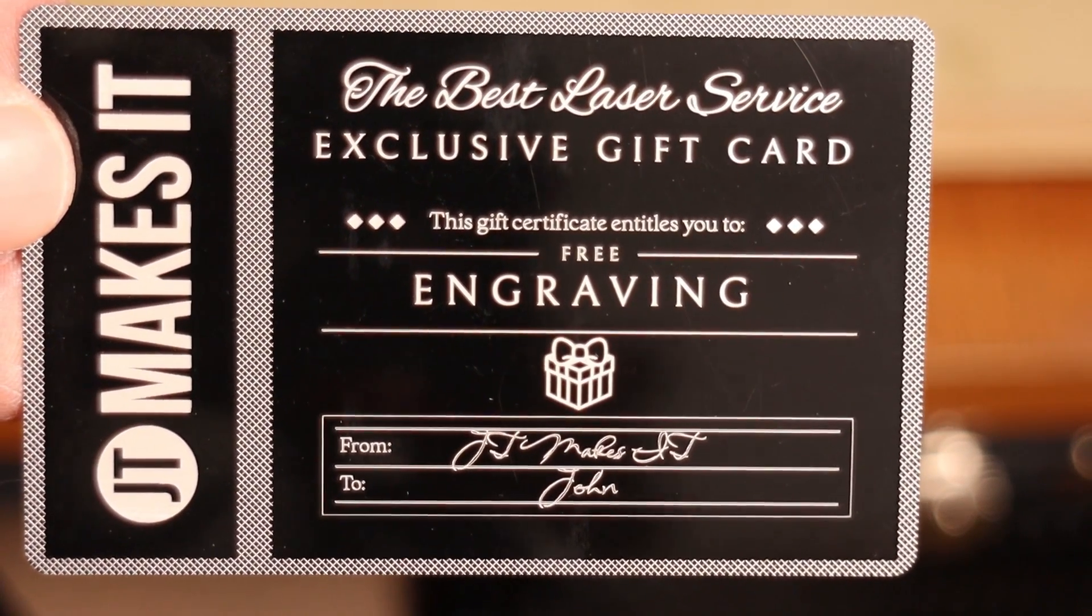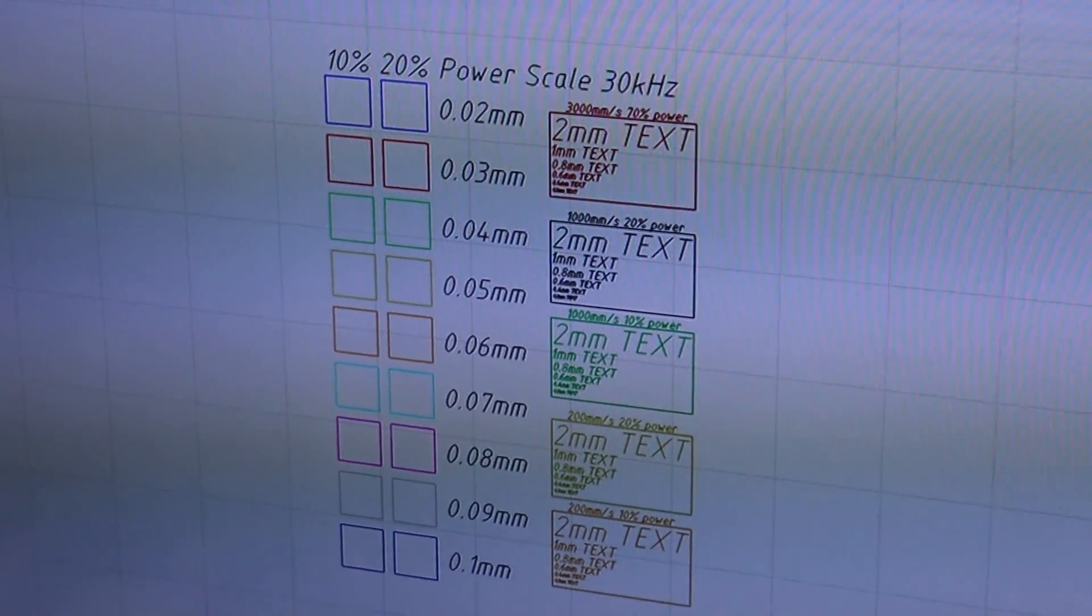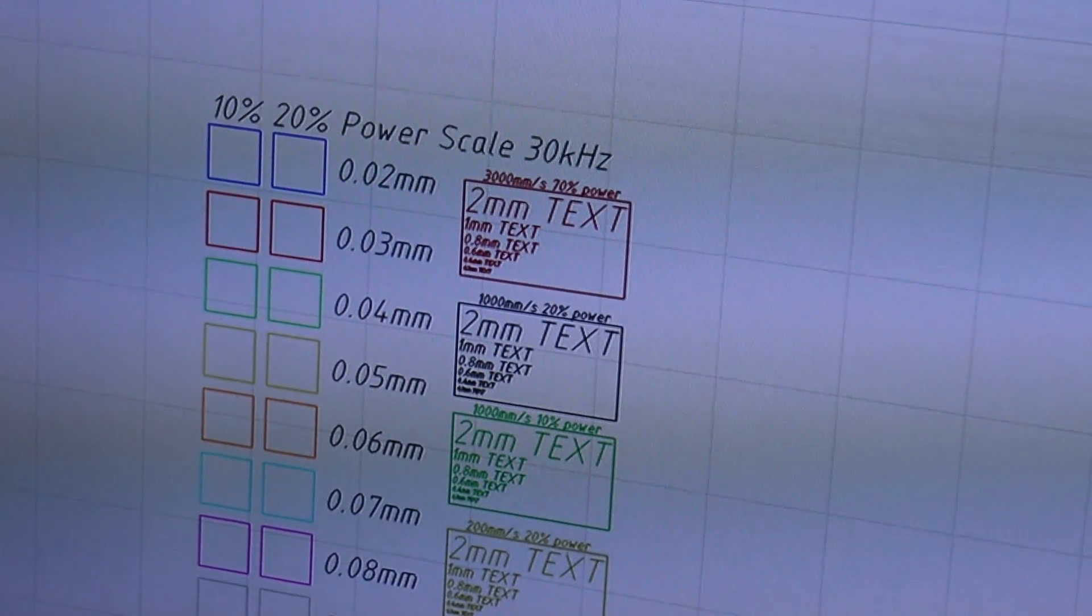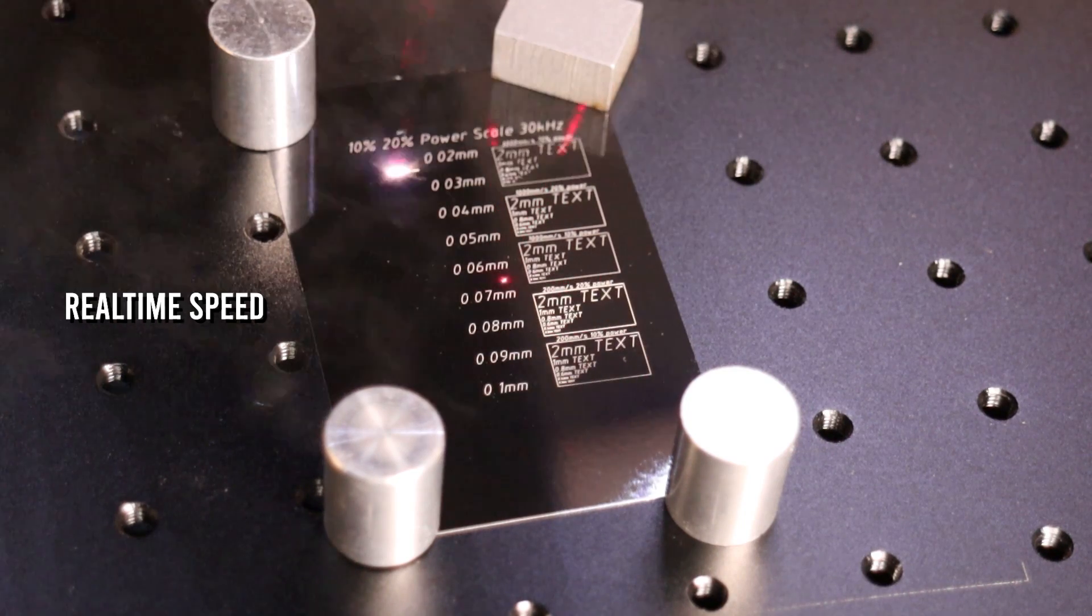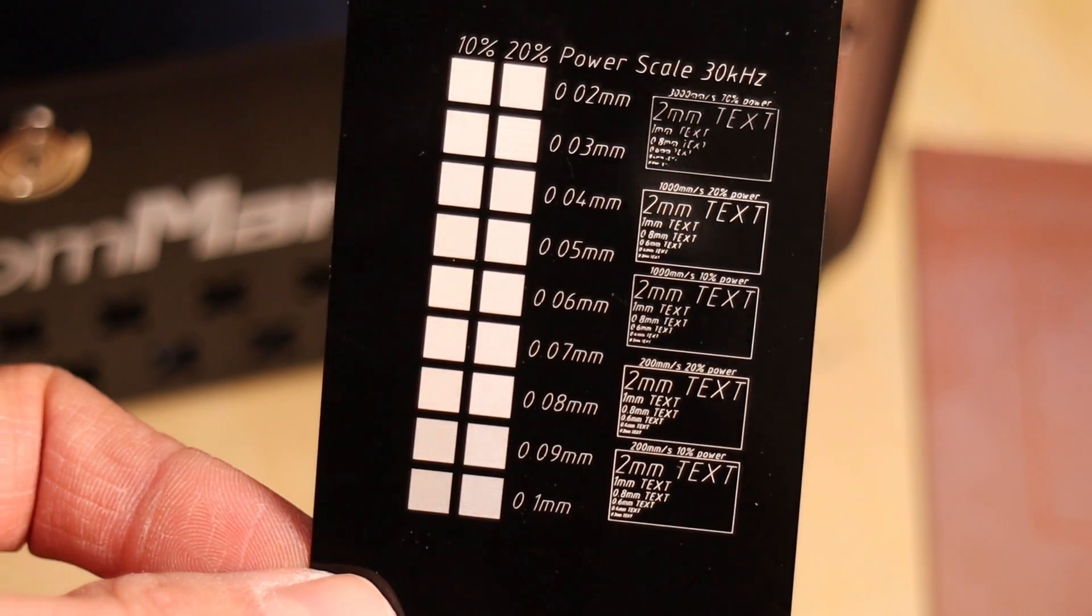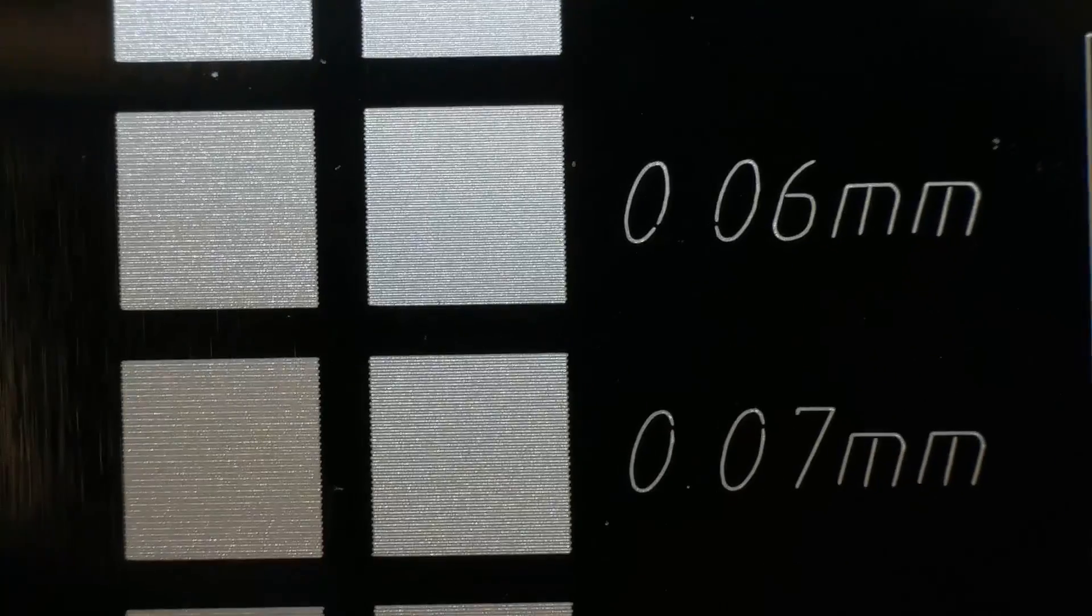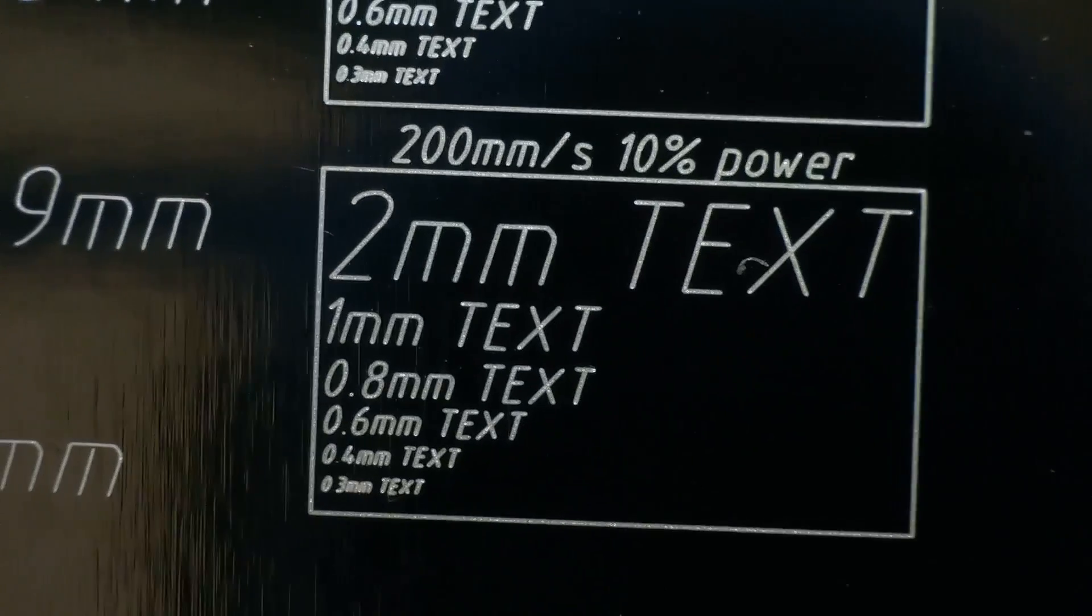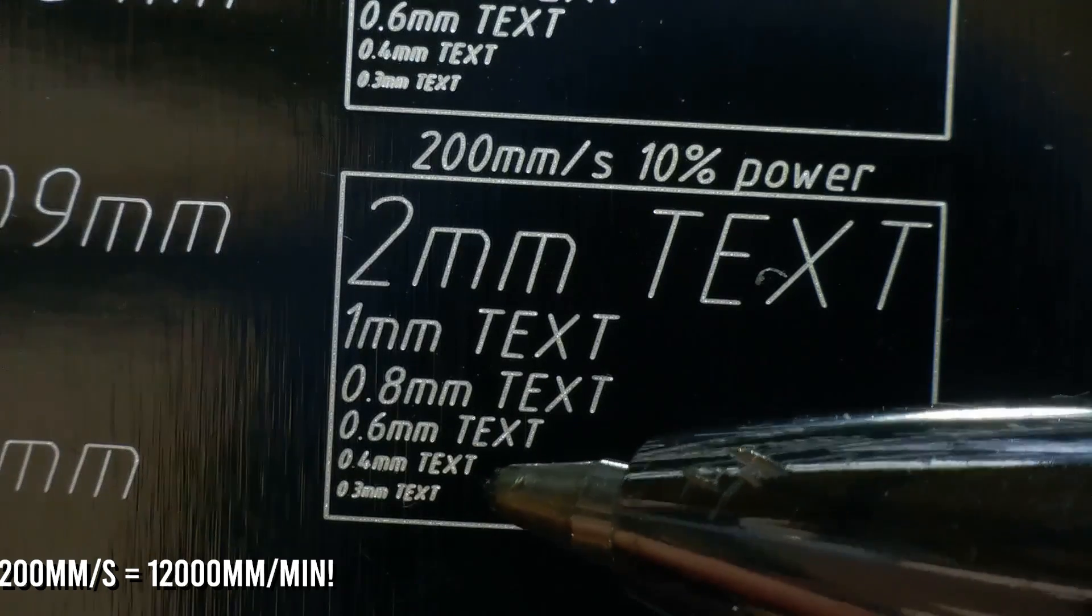It also has a very small focus spot which enables it to engrave very detailed text. Let's measure the focus spot with a simple interval test, together with some small text at different speeds and power to see how precise it is, and measure its laser spot size. The focus spot is very small, approximately 0.05 mm in size. This laser can engrave text as small as 0.3 mm at very high speeds. Here is a tip of a ballpoint pen for comparison.